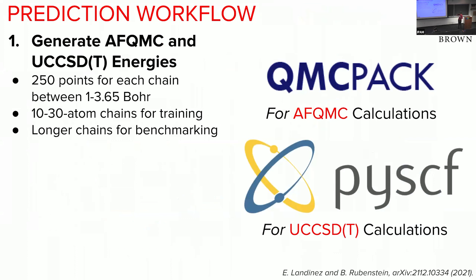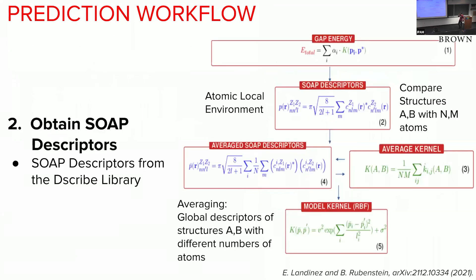To develop these extrapolations, a database of AFQMC and coupled cluster energies was generated — about 250 points for each chain, with R_HH between 1.0 and 3.6 Å, for chains of 10 to 30 atoms. The goal is to extrapolate to the thermodynamic limit of very long chains. Longer chains of about 200 atoms were used for benchmarking. Coupled cluster was chosen so that longer chains could be obtained relatively quickly.